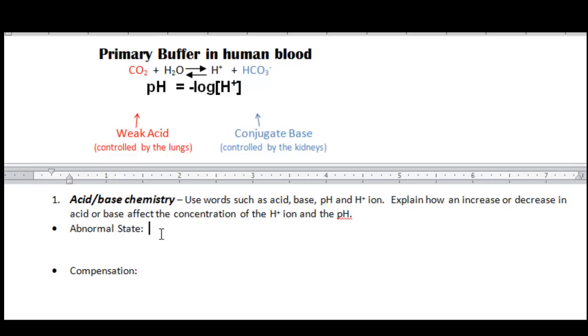The abnormal state is that we have too much CO2. So type something like CO2, which is the acid, identified as the acid, is too high, which causes the H+ to be too high, which therefore causes the pH to drop.